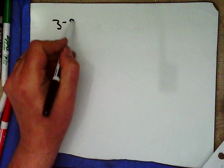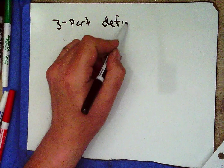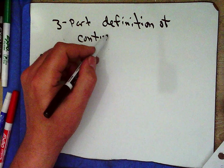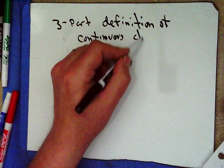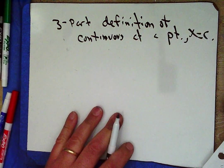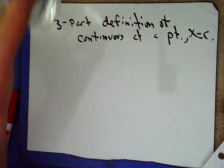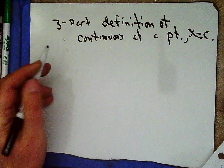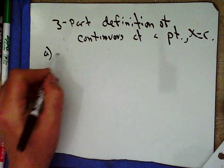Hey, calculus students — here we are on assignment 31, second day of continuity. Let's review the three-part definition of continuous at a point x equals c. Pause the video, write it down, don't look at your notes.